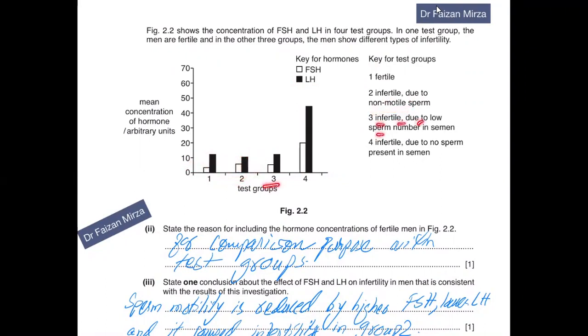If FSH concentrations start to increase and LH is decreased compared to group one, these are infertile due to non-motile sperm. Group three is infertile due to low sperm number in semen. You can see FSH elevation is slightly raised, causing infertility either by non-motile sperm or reducing sperm count. Four is infertile due to no sperm present in semen - LH is largely raised and FSH is raised as well. The blank bars are FSH and the black ones are LH.